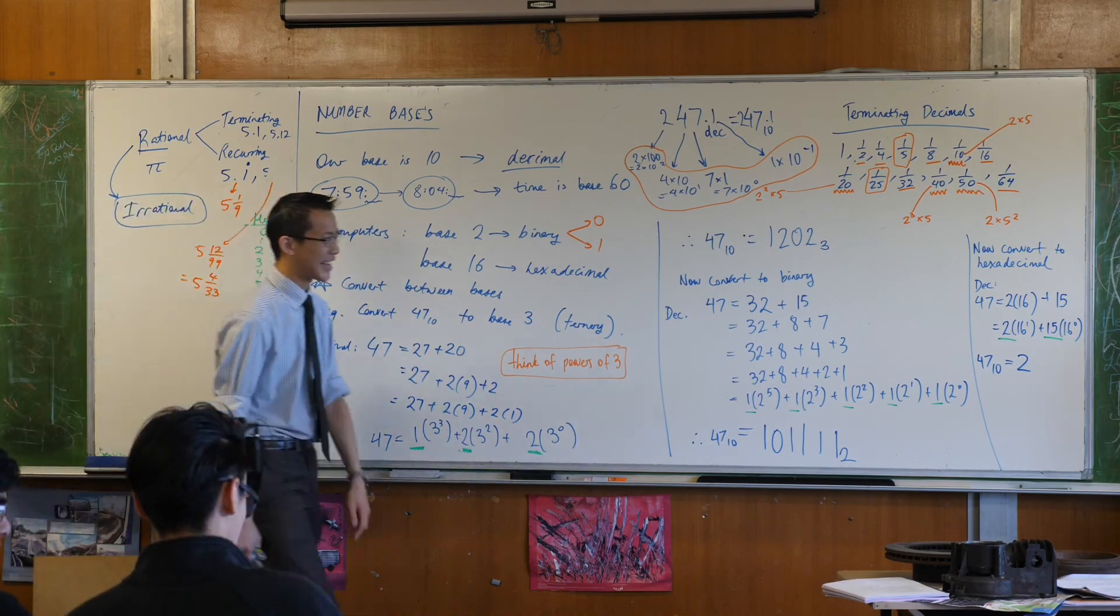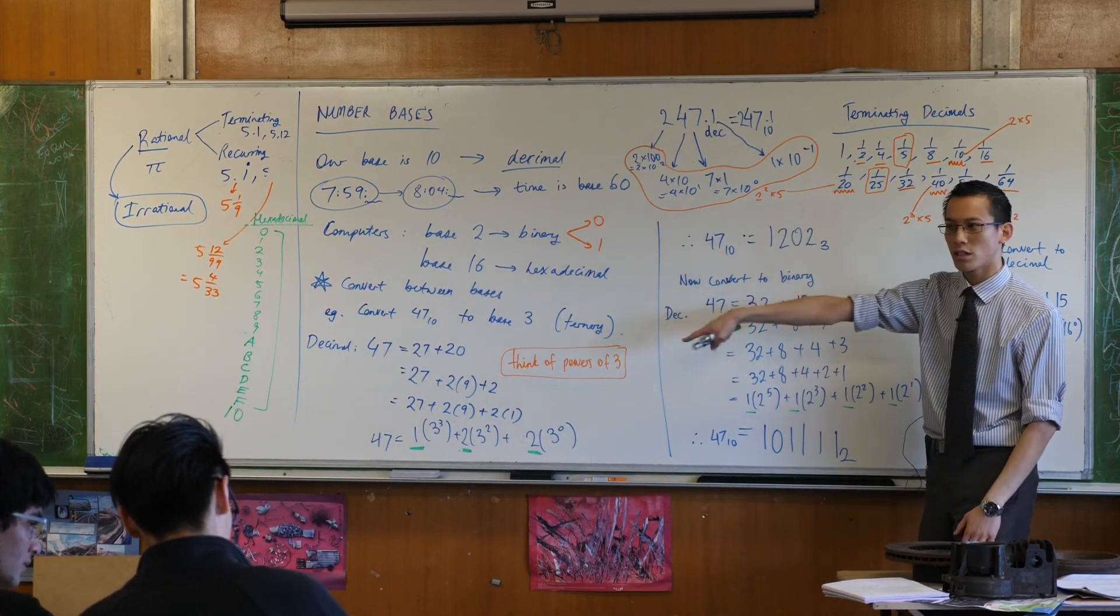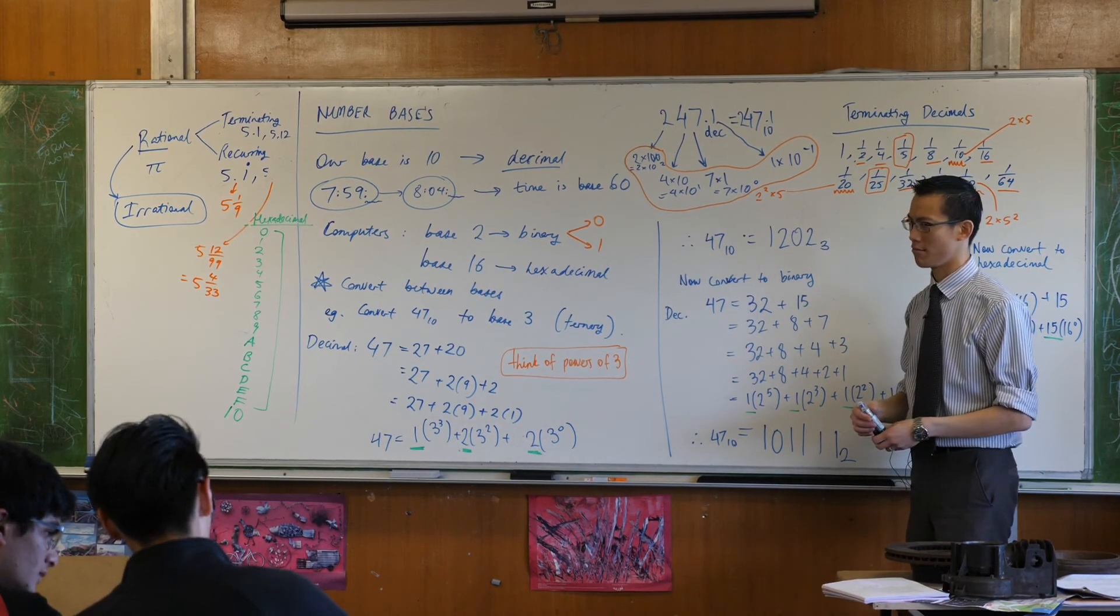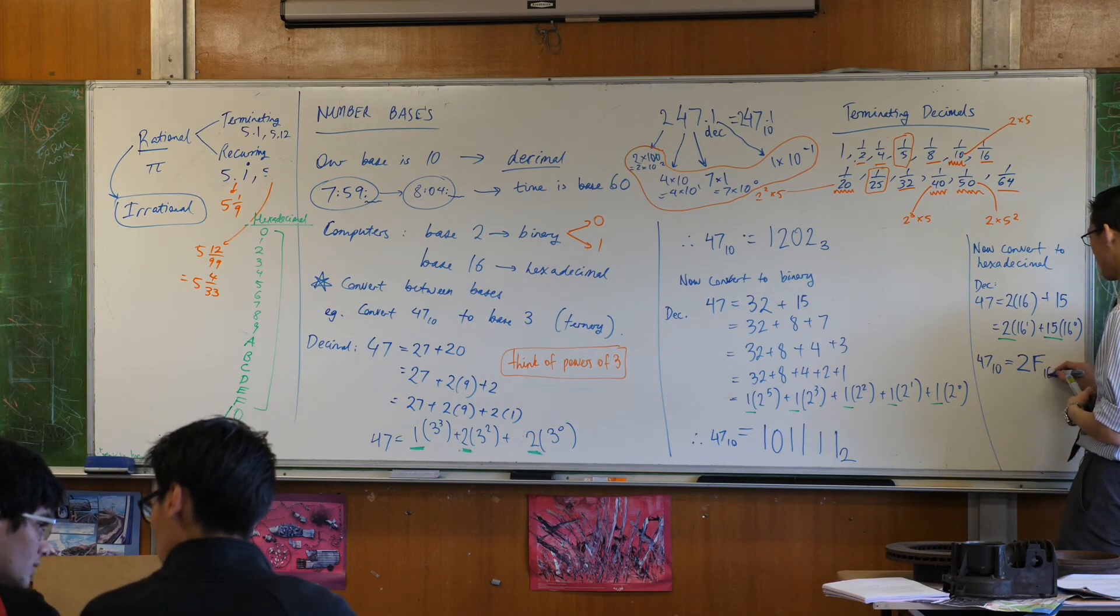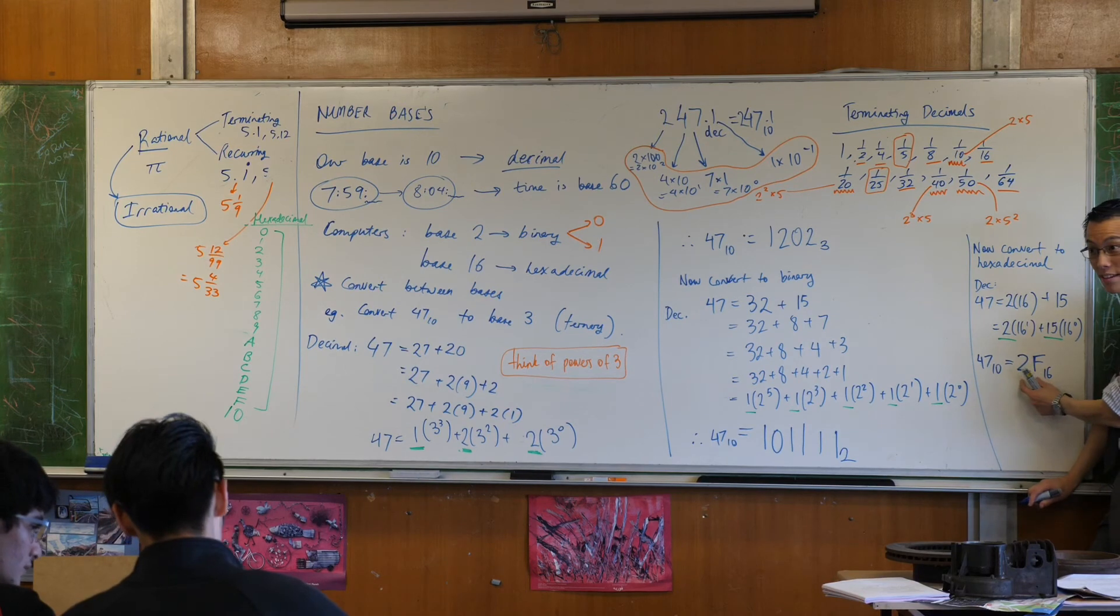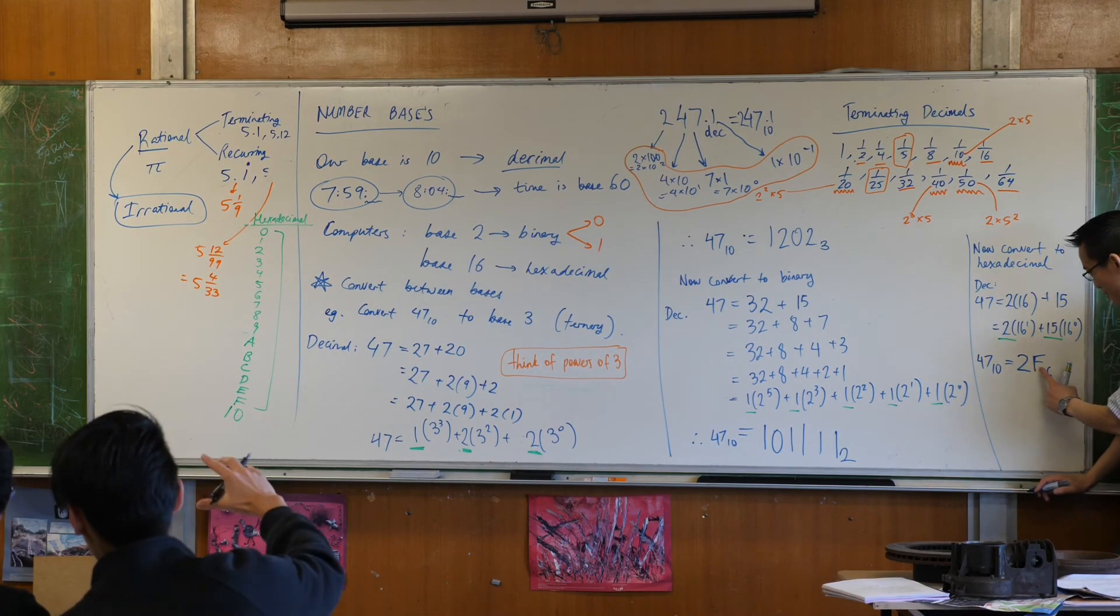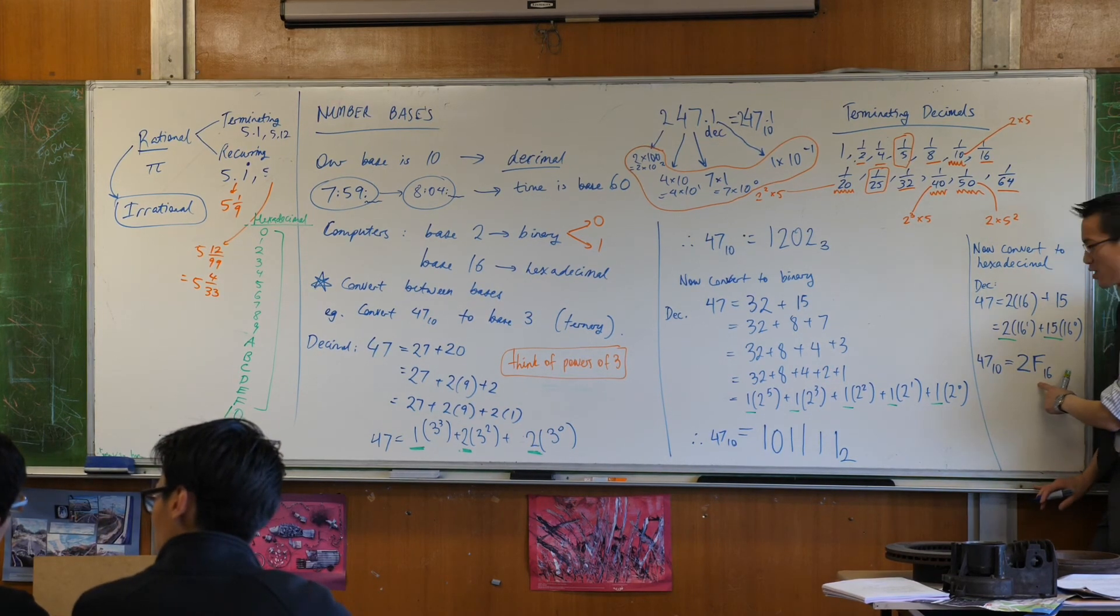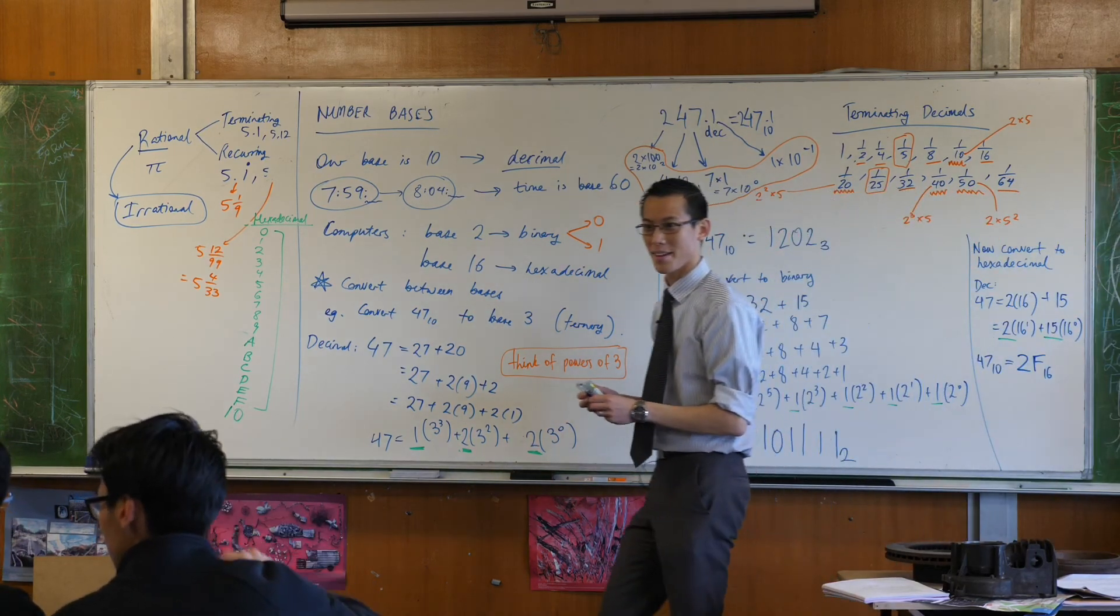Fries your brain a little bit. Okay, so therefore, which number was 15? Have a look on my list. Which number was 15 in decimal? It's F. Very good. So this number, this number means 2 lots of 16, 15 lots, or F lots if you like, 15 lots of 16 to the 0. That's a bit weird, but that's what hexadecimal is like.